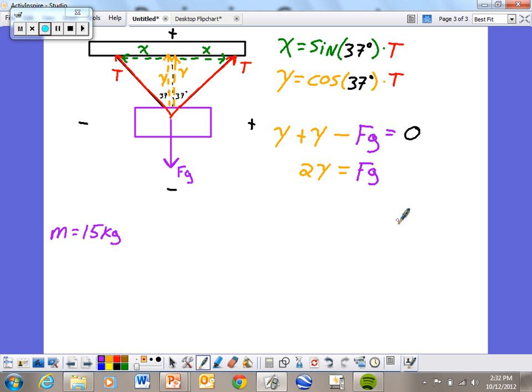From here, what we can do is plug in what we've got for Y. And that is, don't forget the two, but the Y is cosine of 37 degrees multiplied by the tension. And that's going to equal the force of gravity of this sign.